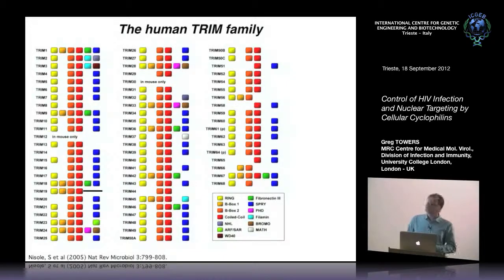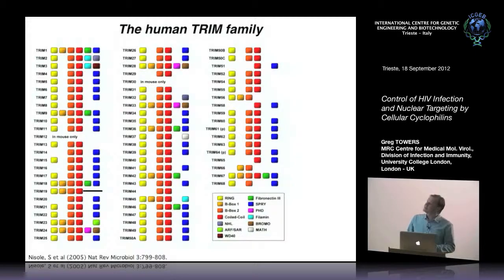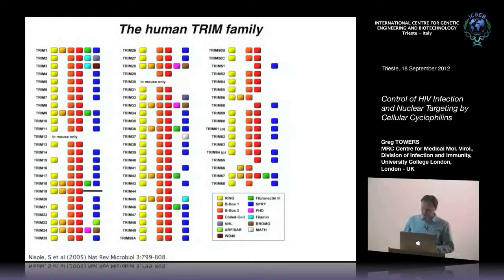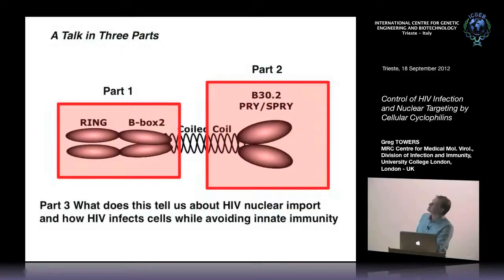Another example of a tripartite motif protein is PML. The reason to come and talk to Amalio and Marina was to compare the work on TRIM5 with their work on PML and identify opportunities for collaboration. I'm going to talk about three aspects of TRIM5: the enzymatic function - the E3 function for ubiquitin; the C-terminus which directly binds virus and how that's evolved; and then what we've learned about cell biology and HIV biology in general from studying this restriction factor.